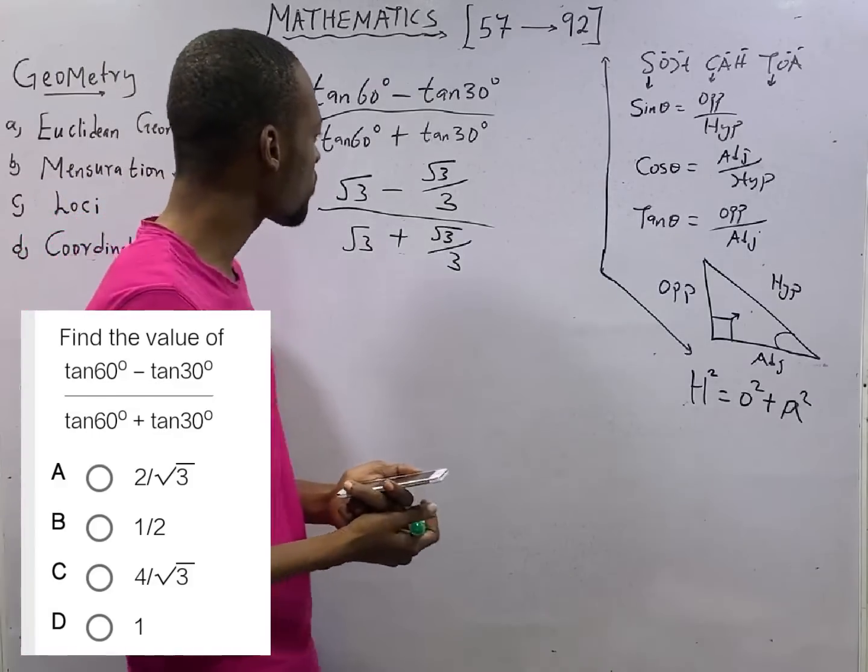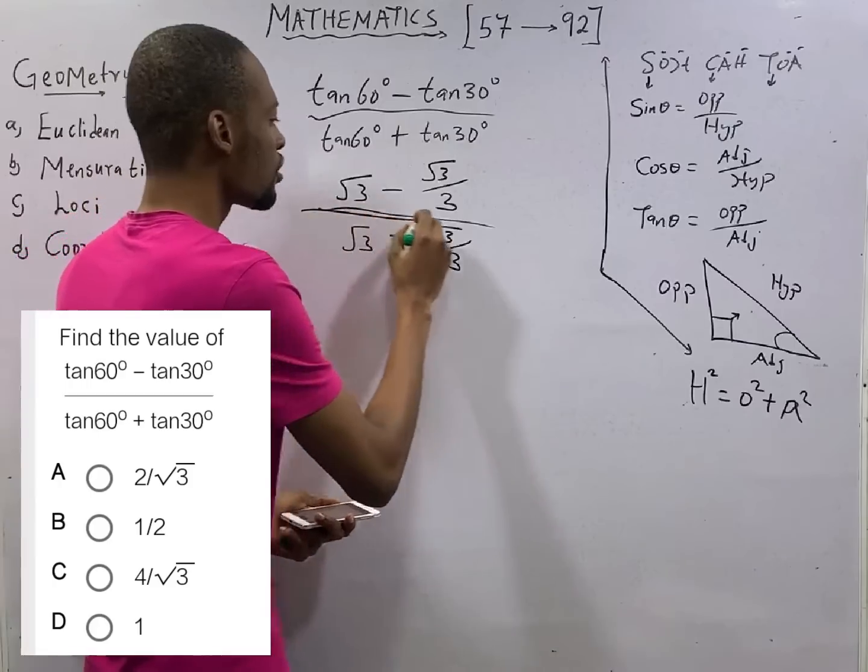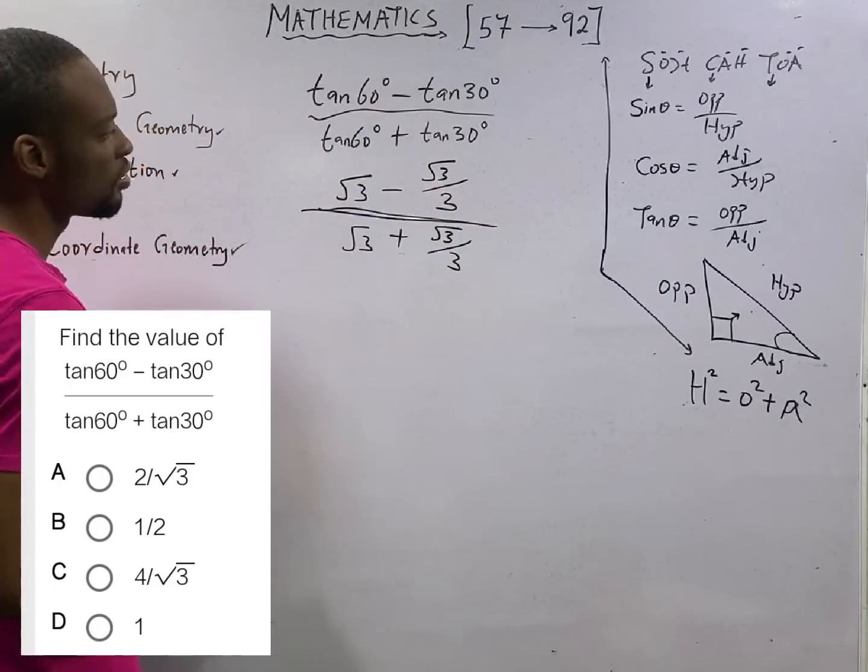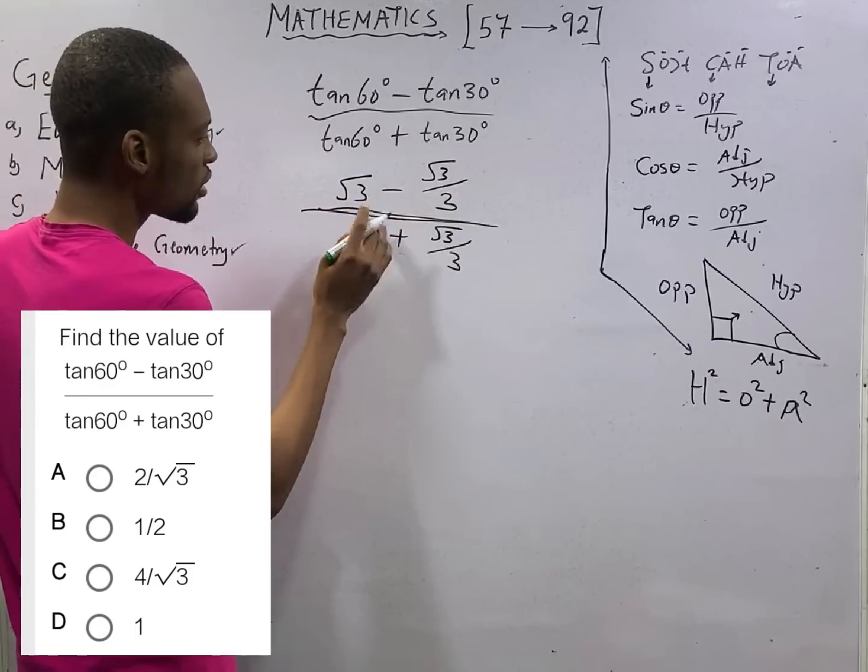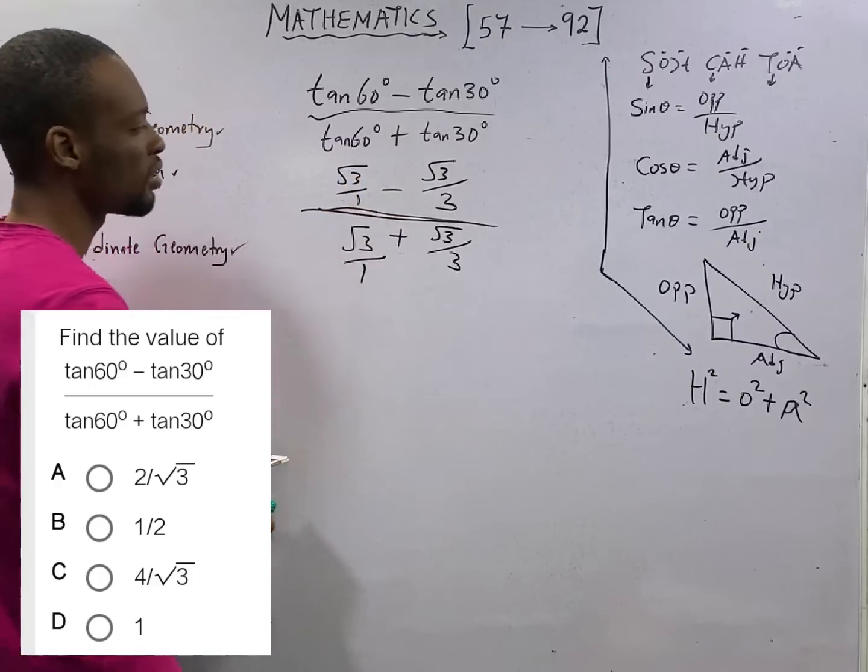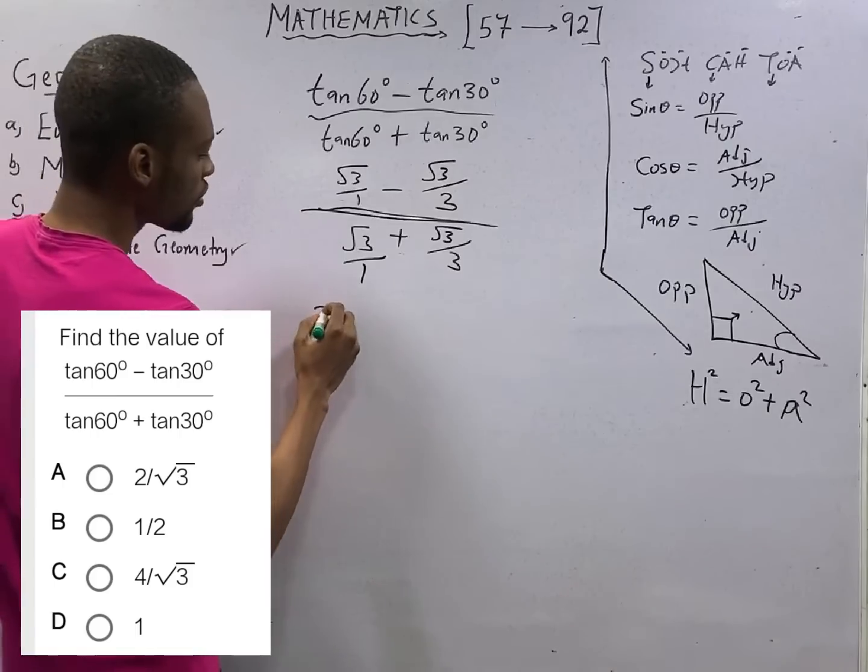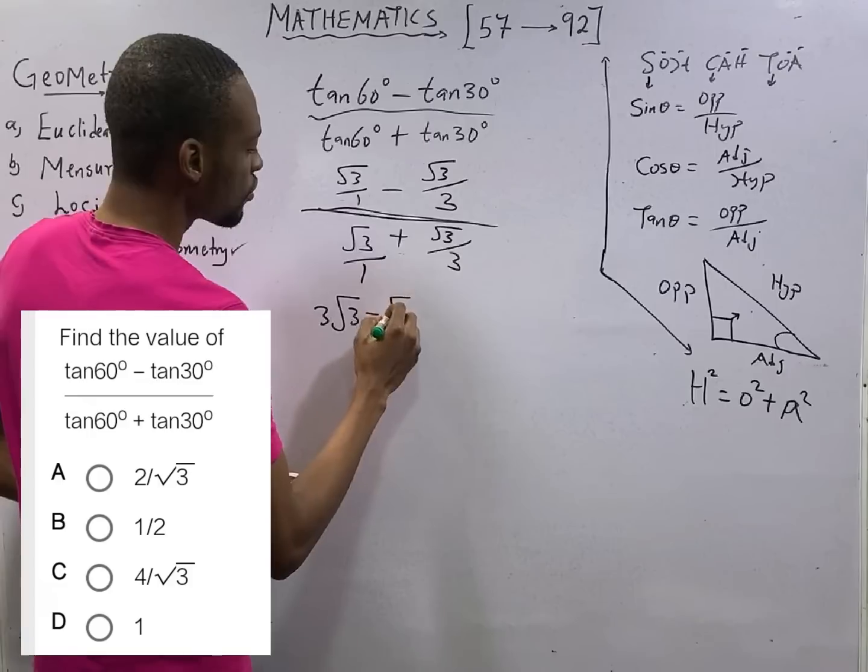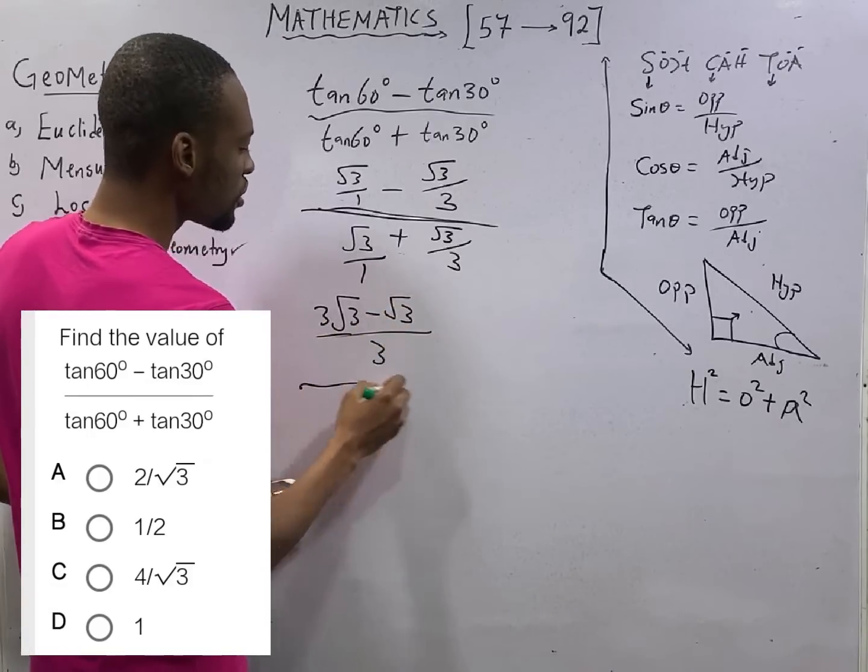I don't think you should have a problem with something like this. This is the numerator and the denominator. If you find the LCM of the numerator, this is the same thing as root 3 over 1, and this is the same thing as root 3 over 3. LCM is 3. So, 3 root 3 minus root 3 over 3. This is the numerator.